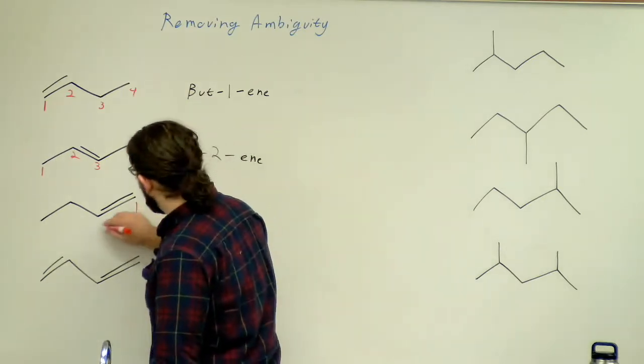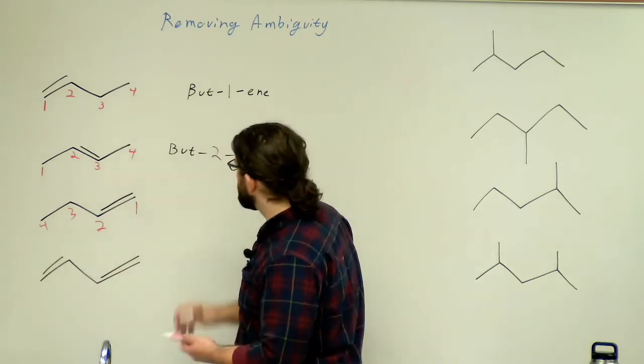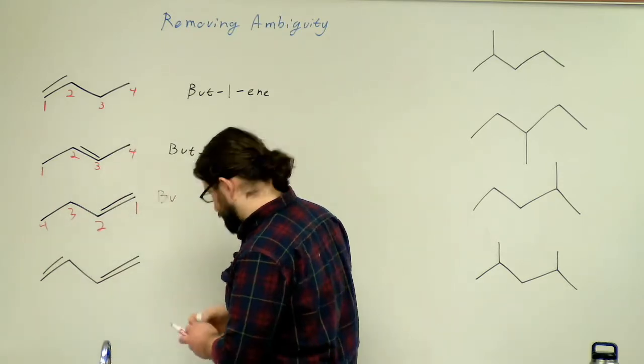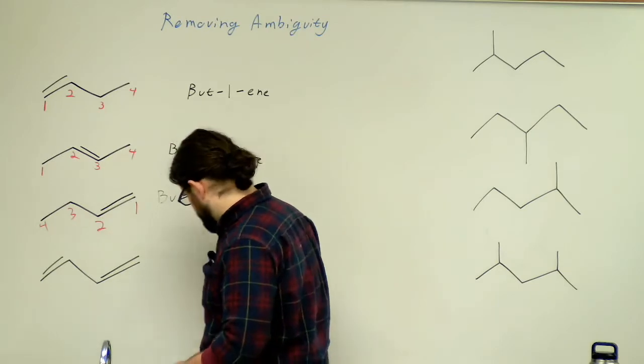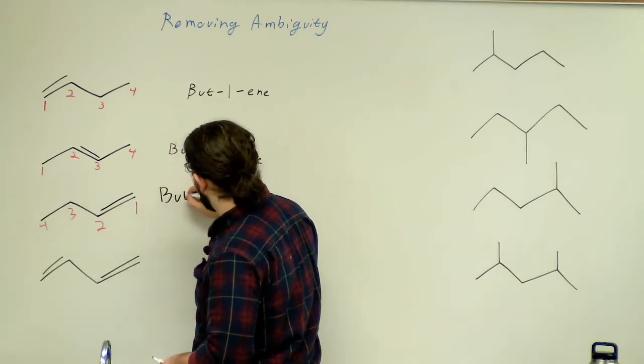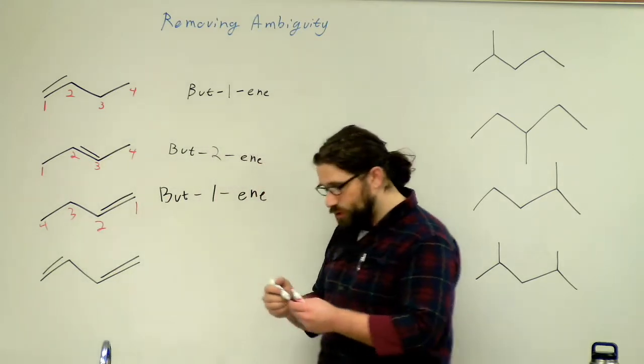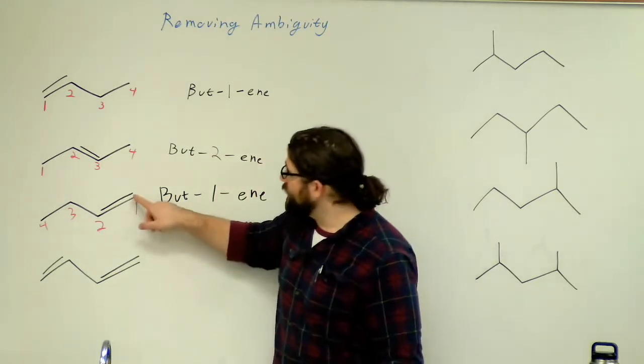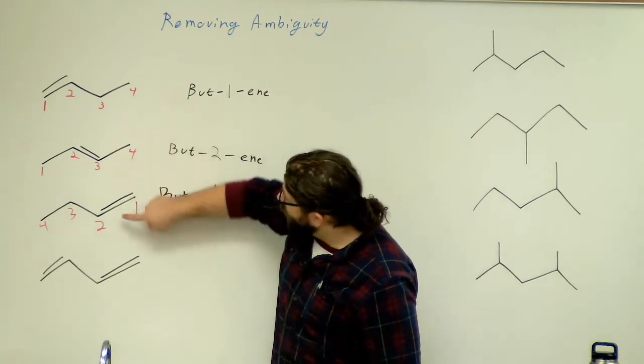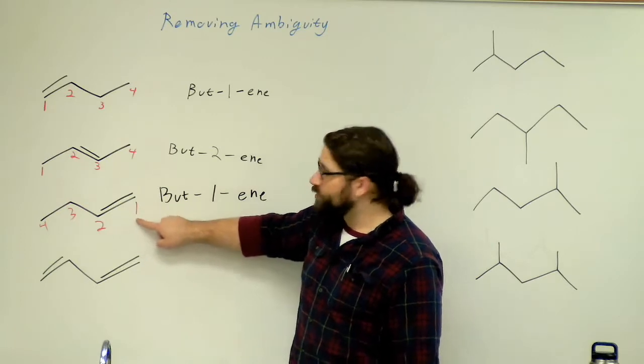So that makes this bute, this marker is dying. Again, but-1-ene because the lower number where the alkene starts, where the double bond starts, is on carbon number one.